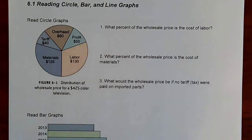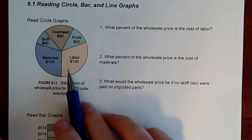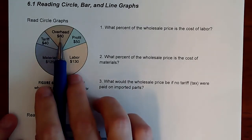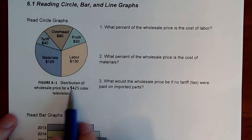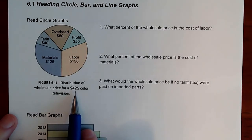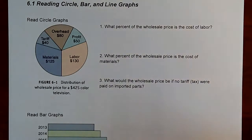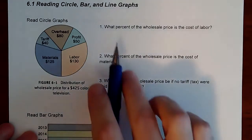We start with a pie chart. Remember that a pie chart represents the whole chunk of information. This one shows the distribution of the wholesale price of a color TV. In that $425 TV, all the costs and profit are broken out. So if they're asking anything related to the price, it's going to be out of $425.